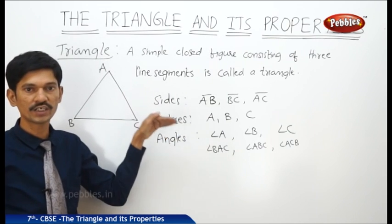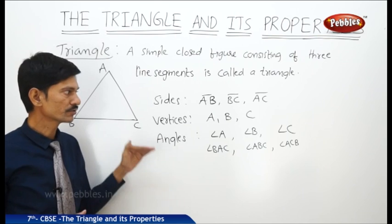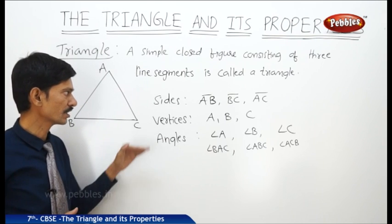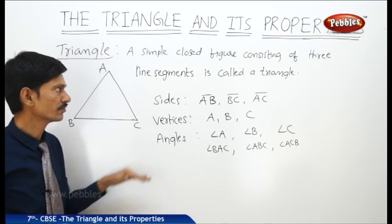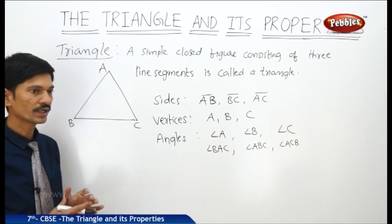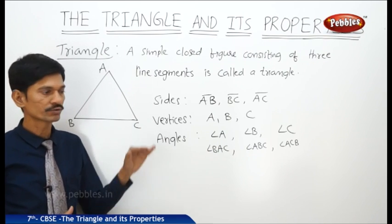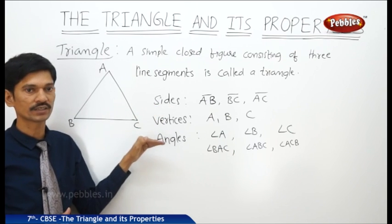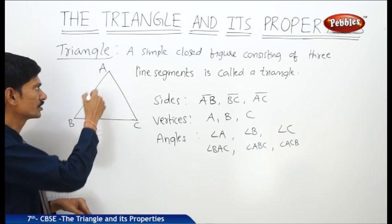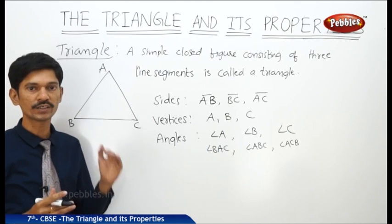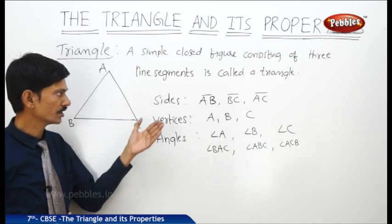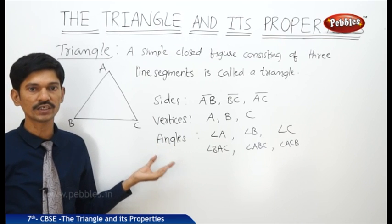The three sides and the three angles are called the six elements of the triangle. Any triangle has mainly six elements: three sides and three angles. A simple closed figure consisting of three line segments is called a triangle. Every triangle has six elements — three sides and three angles. The line segments which form the triangle are called sides, and each two line segments meet at a point called a vertex. At each vertex, an angle is formed, so there are three sides, three vertices, and three angles in a triangle.